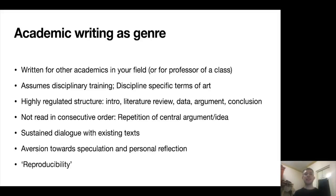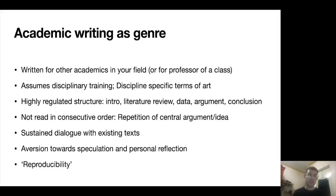Academic texts are written to be in sustained dialogue with existing texts — you can assume readers have read certain works and engage with those. Another feature of academic writing is a general aversion towards speculation and personal reflection. Especially in the social sciences, there's this idea of 'reproducibility' — the notion that anyone could write this piece, therefore 'I'm not in the piece, it's objective.' That's how I generally think about academic writing as a genre, and it's neither a criticism nor a praise of it.